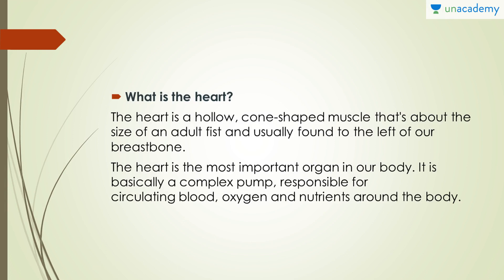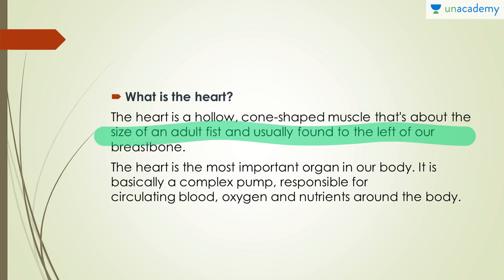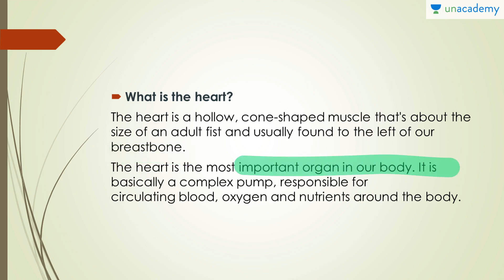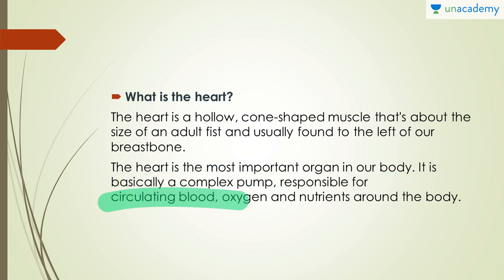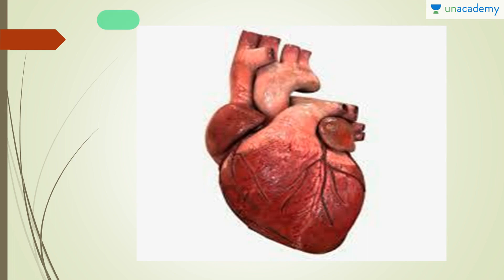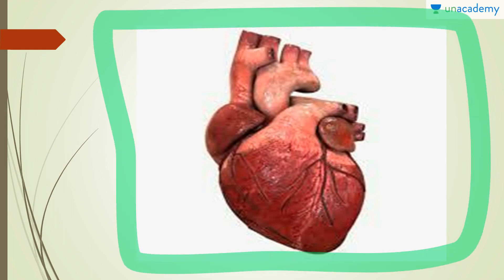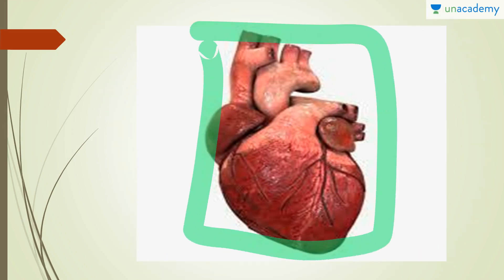Now, what is a heart? The answer is simple — it is a hollow, cone-shaped muscle that is about the size of an adult fist, and is usually found to the left of our breastbone. It is the most important organ in our body, as it is responsible for circulation. It basically is a complex pump responsible for circulating blood, oxygen, and nutrients around the body. This is a picture of a real human heart.